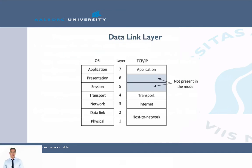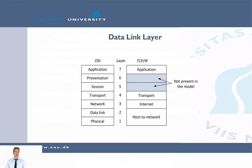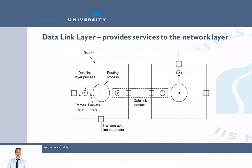If we look at where the data link layer is, we can look at the OSI model and TCP/IP. In the OSI model, we are talking about layer 2, and in TCP/IP, we are talking about the host network layer. So what the data link layer really does is it provides services to the network layer.